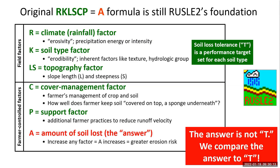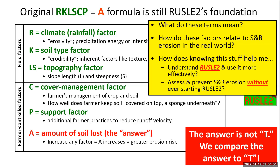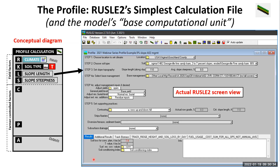Same as previous lessons, our original RKLS-CP equals A formula is RUSLE2's foundation. When we look at the LS factor — which I call a single factor, though some people break it into two — it's a topography factor. In this conceptual diagram of a profile calculation it's over here, and in the actual screen for a profile calculation it's right here at step three. That's where you put in your LS, your topography values, which RUSLE2 then uses in the erosion calculation.